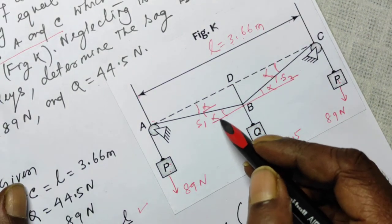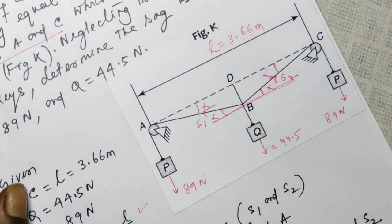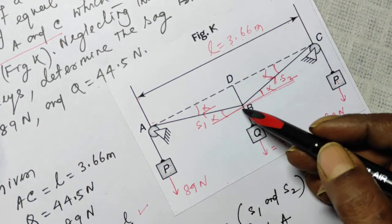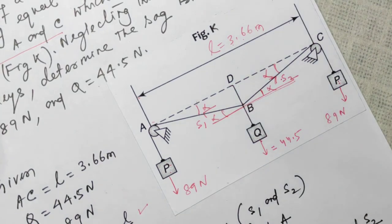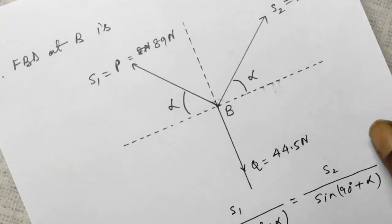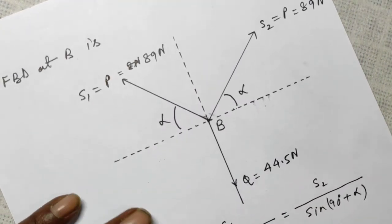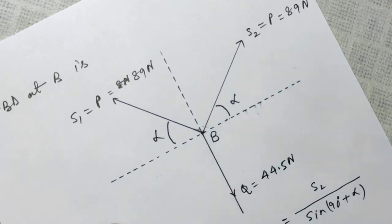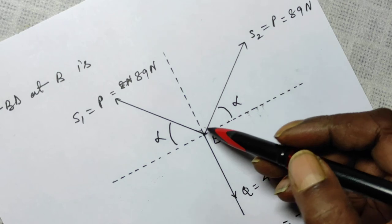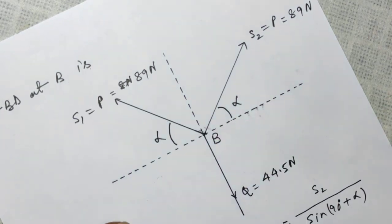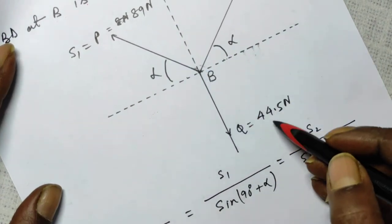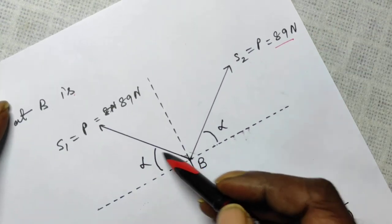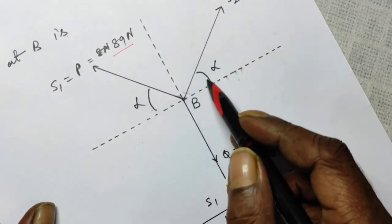S1 makes angle alpha with the horizontal and S2 makes angle alpha with the horizontal. Let us draw the free body diagram at point B with the three forces S1, S2, and the weight Q. This is the free body diagram. Both angles appear the same — they are equal. At point B, weight Q = 44.5 N, S2 = 89 N, and S1 = 89 N, with angle alpha as explained.